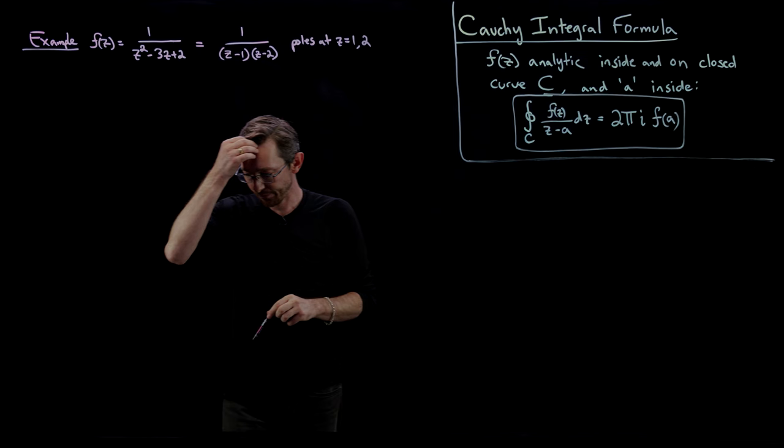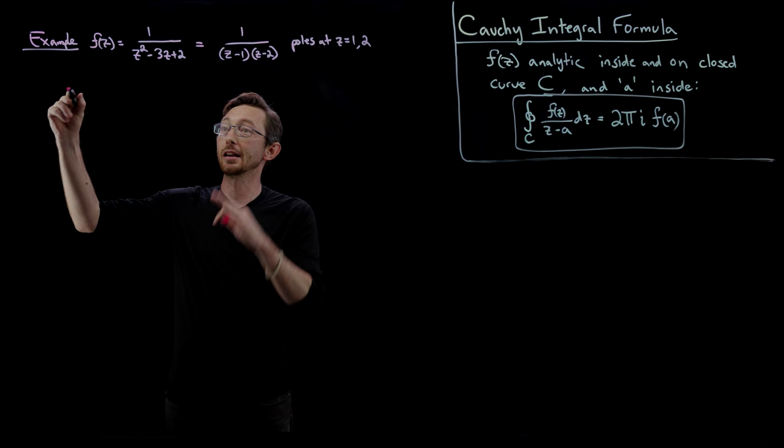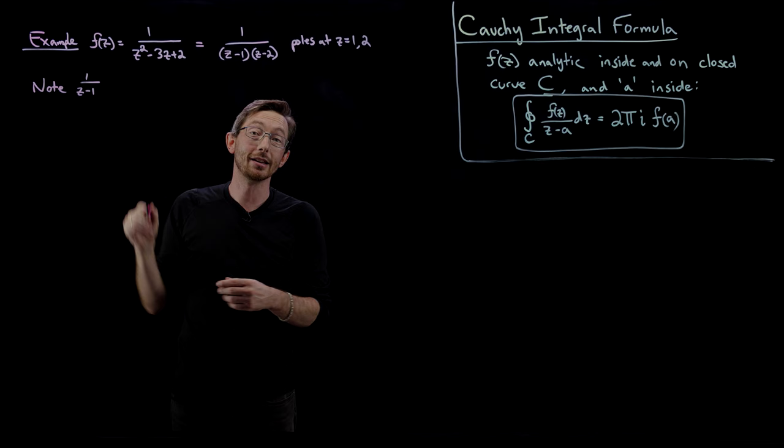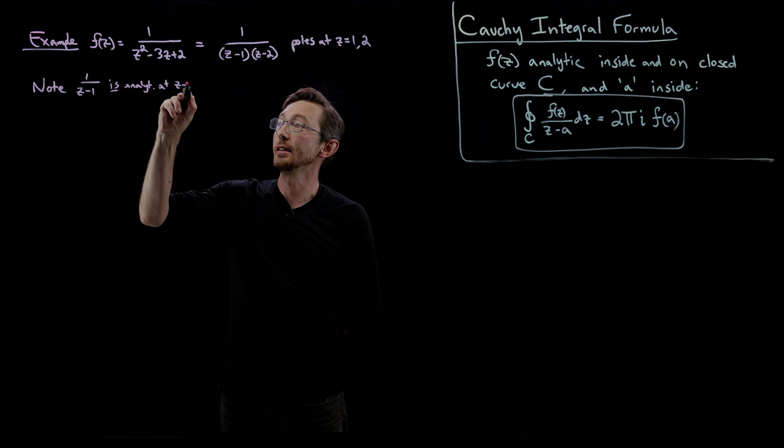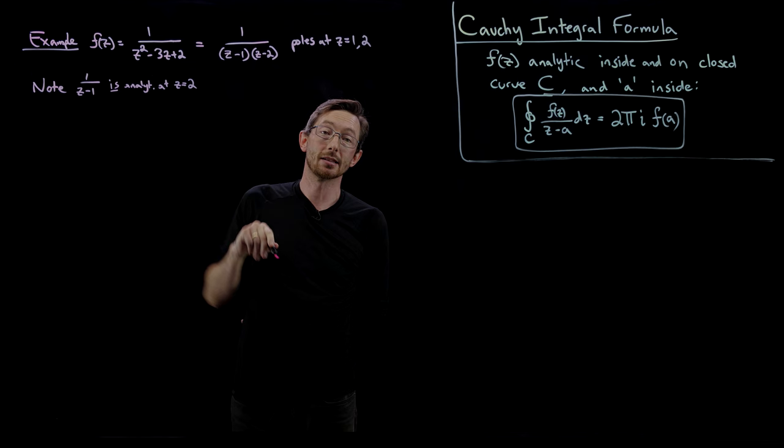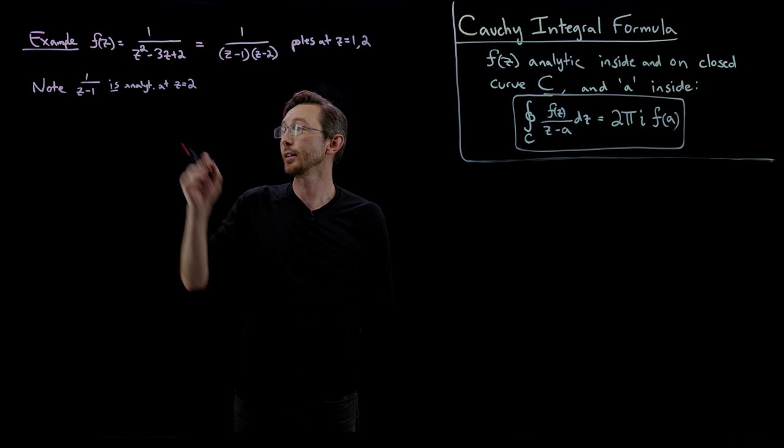It's important to note: one over z minus one is analytic everywhere except for z equals one, so one over z minus one is analytic at z equals two. And similarly, one over z minus two is analytic at z equals one. One over z minus one is not analytic at z equals one, and one over z minus two is not analytic at z equals two.